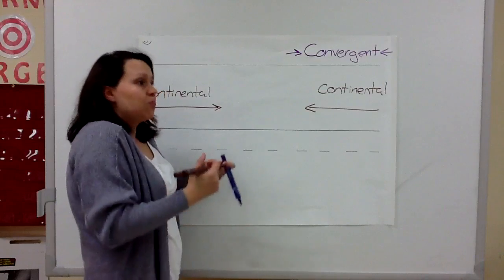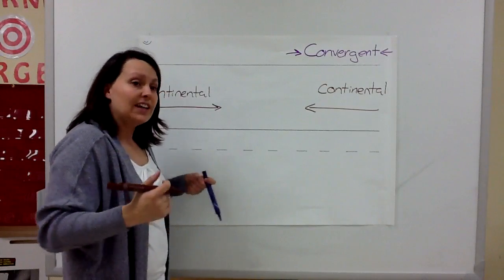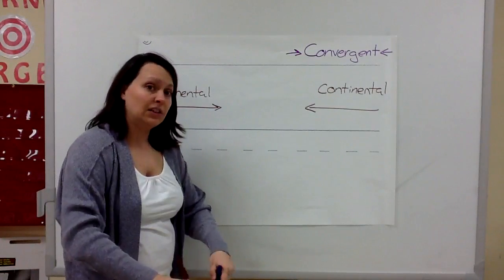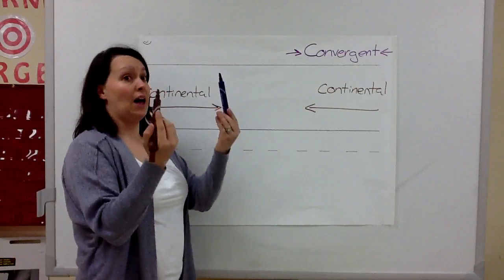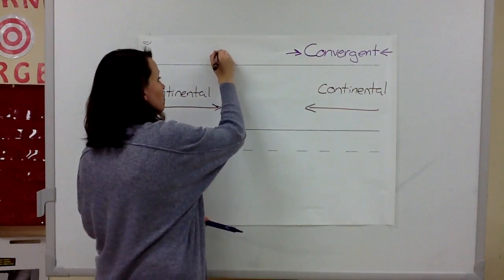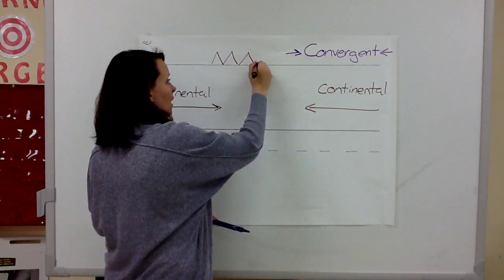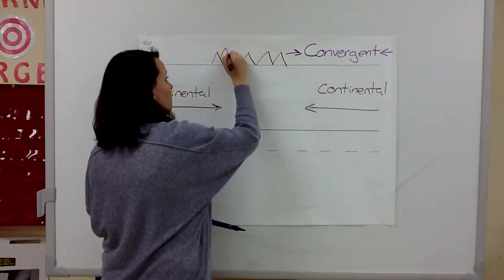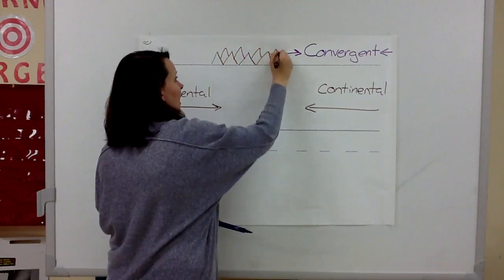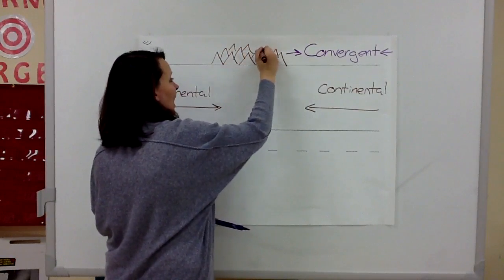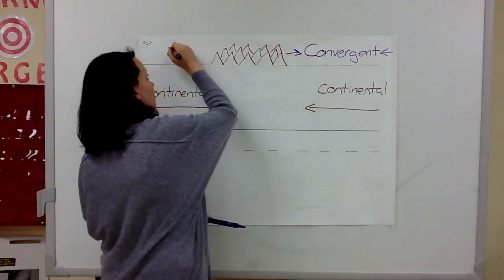They're going to just keep running into each other, and if they can't go down, they're going to go up. And they're going to build and build and build until we have a mountain range.